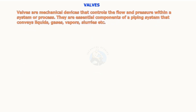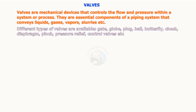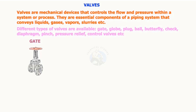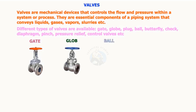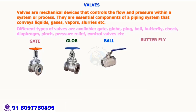Valves are mechanical devices that control the flow and pressure within a system or process. They are essential components of a piping system that conveys liquids, gases, vapors, slurries, etc. Different types of valves available include gate, globe, plug, ball, butterfly, check, diaphragm, pinch, pressure relief, and control valves.